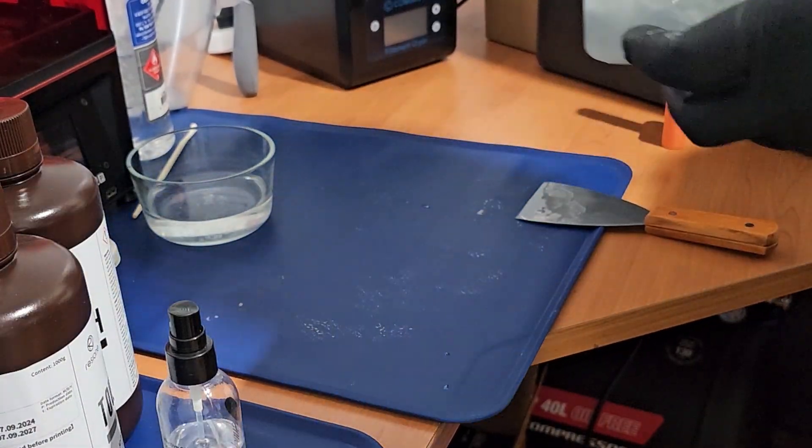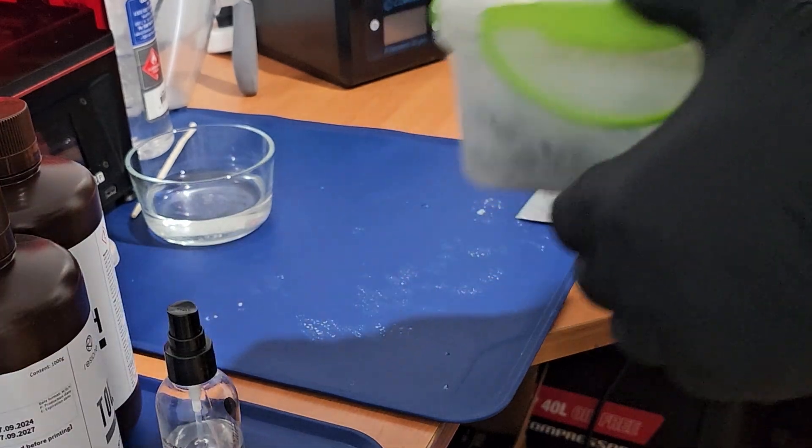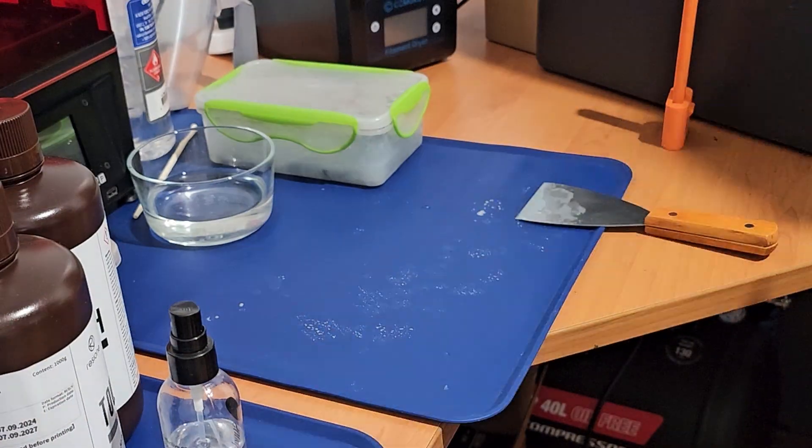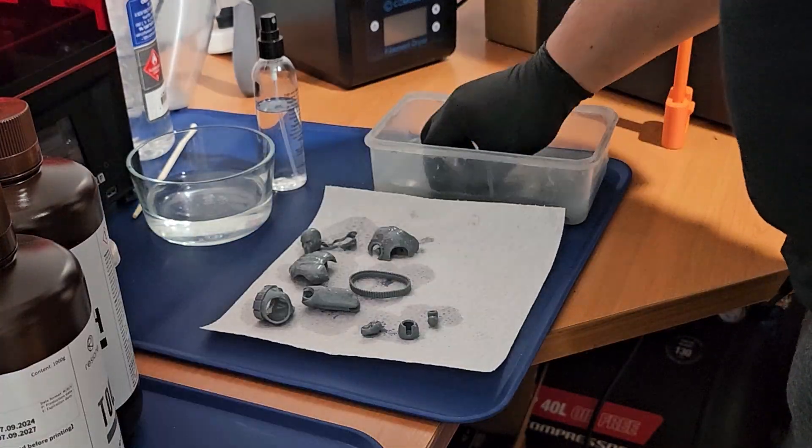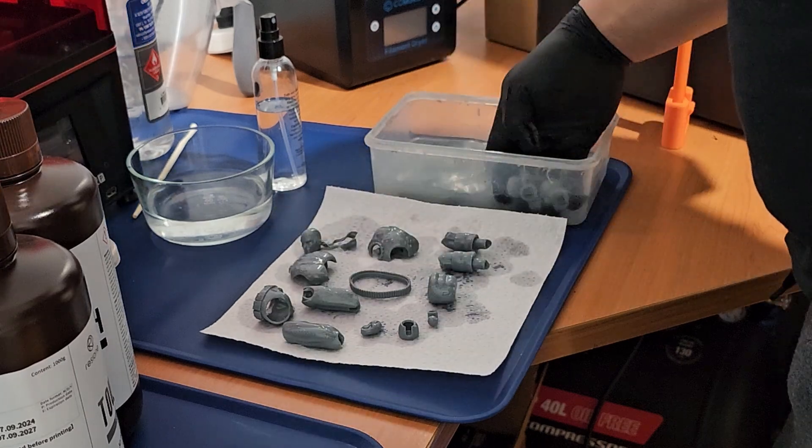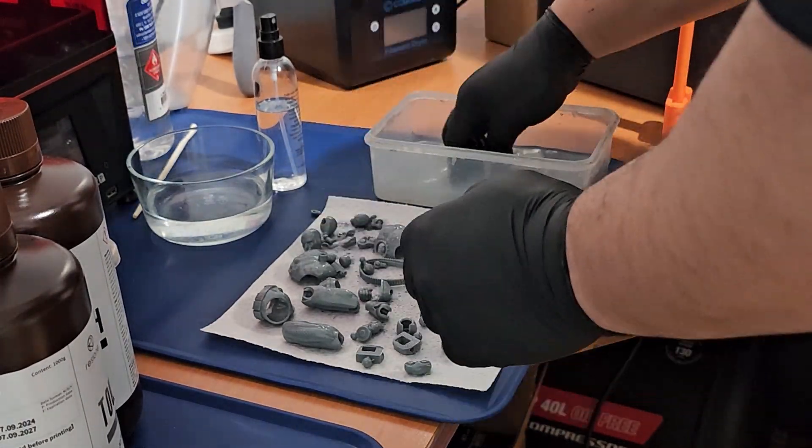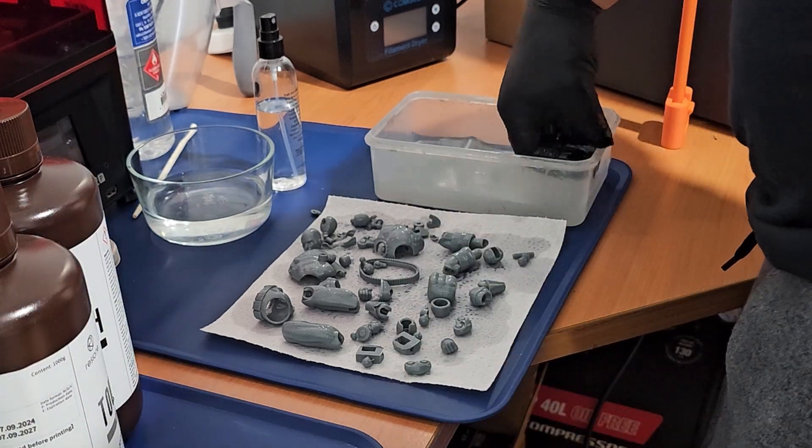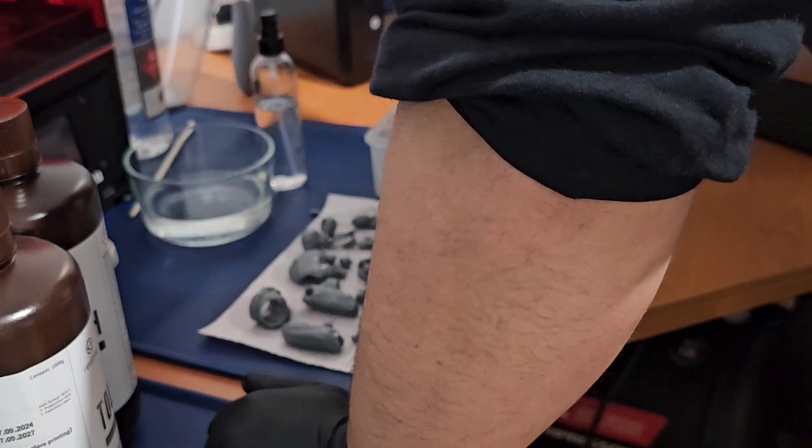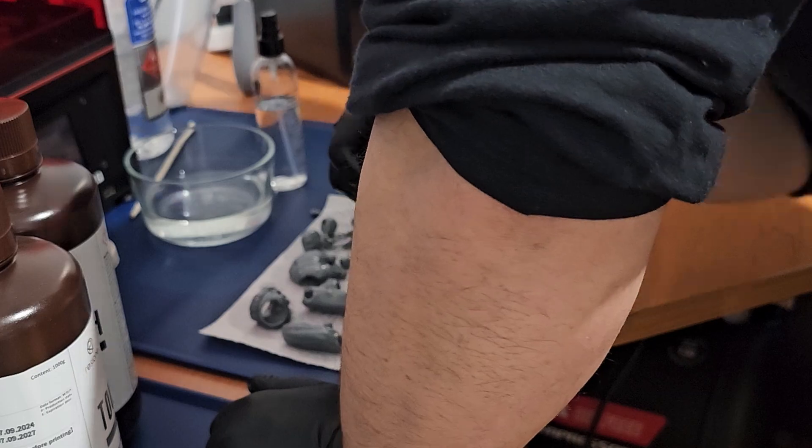The downsides to this detergent is that the chemicals still feel very strong and can damage wooden surfaces similar to IPA if exposed for a long period of time. There is a slippery feeling to the resin printed parts once it's done cleaning in the detergent. Since the detergent does not evaporate as quickly as IPA, the printed models may take slightly longer to dry before curing.